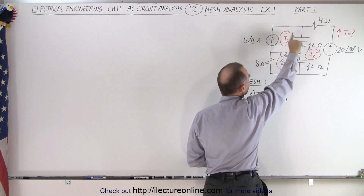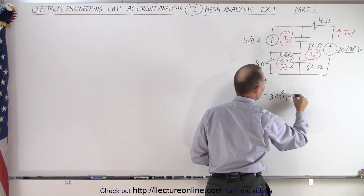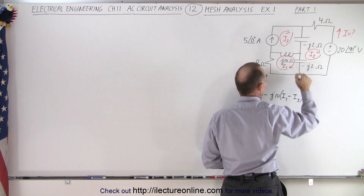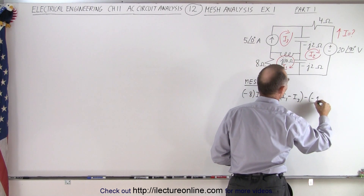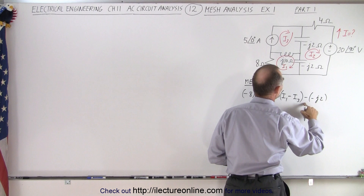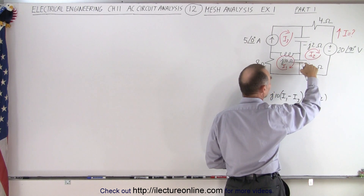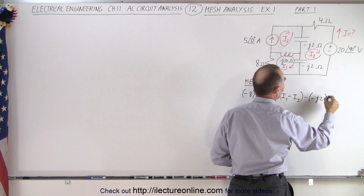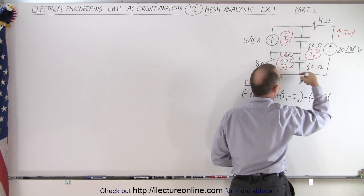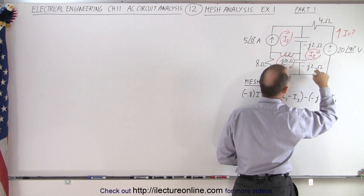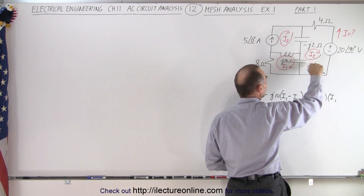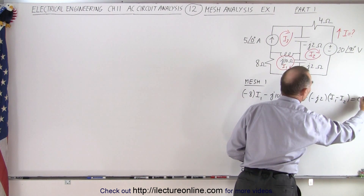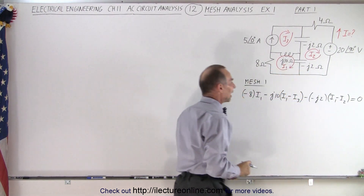But notice we also go against I3, so we must subtract I3. And then we have a voltage drop across the capacitor, so it's a minus times a minus J2. We've got to be careful about the signs — we have a voltage drop, but the reactance across the capacitor is a negative J2. And we must multiply that times I1, and multiply that times the negative I2, because we go against the current in I2. So minus I2, and then we come all the way around — that adds up to 0.